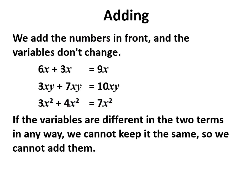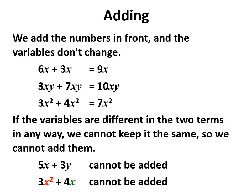If the variables aren't the same, we cannot keep them the same so we cannot add them. If the variables are different, then the two numbers cannot be added. So in this case, 5x and 3y do not have the same variables, they cannot be added. 3x squared and 4x do not have the same variables because x squared and x are not the same, they cannot be added.